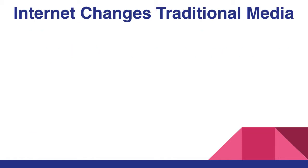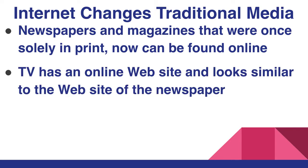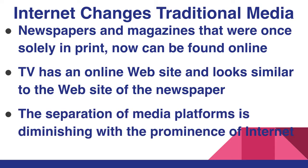The Internet has greatly changed traditional media. Newspapers and magazines that were once solely in print can now be found online. Even the news found on TV has an online website and looks similar to the website of a newspaper. The separation of media platforms is diminishing with the prominence of the Internet.